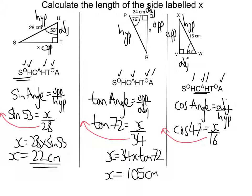I now need to move my 16 to get x on its own. So I'm going to times both sides by 16 to get 16 cos 47. Put that in my calculator, and my answer should be 10.9 centimeters to one decimal place.